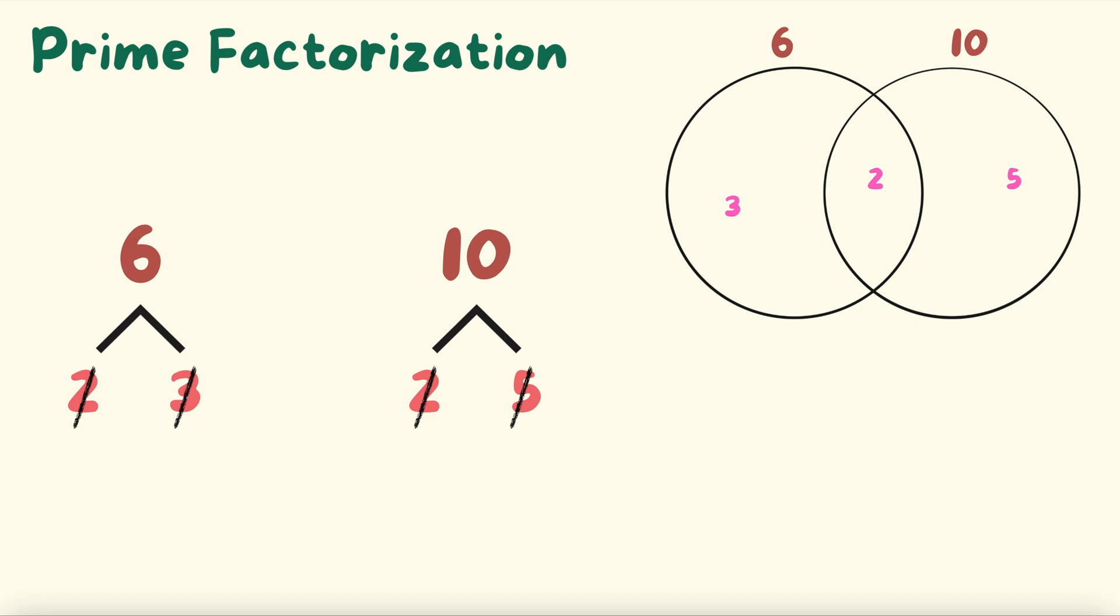Now once you find these three numbers or however many numbers you come up with in your Venn diagram, what you're going to do is you're going to multiply all the numbers within the Venn diagram to find your LCM and our LCM is 30. So even though we used a different strategy this time all three strategies got us to the LCM of 30.